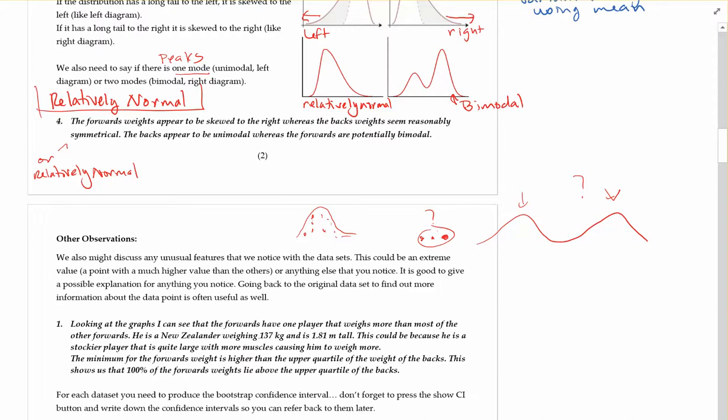He is a New Zealander. You can go back and look on your data set to find that out. At 137 and 1.8 meters tall. This could be because he's a stockier player that is quite large with more muscle causing him to weigh more. The minimum for forwards weights is higher than the upper quartile weights for the backs. This shows 100% of the forwards weights lie above the upper quartile of the backs. That's just kind of going back to how far spread out this data is.